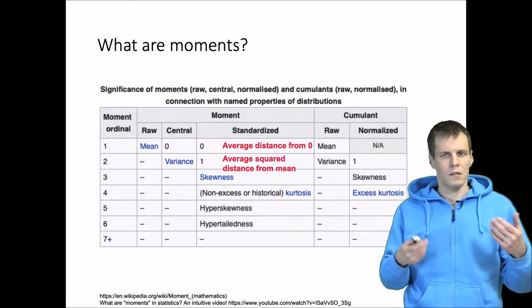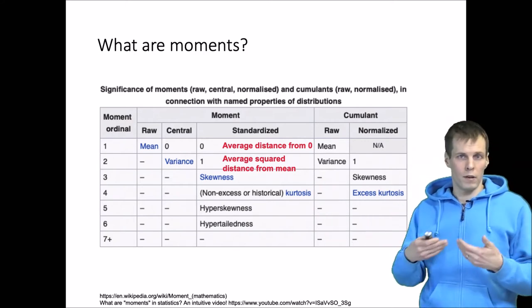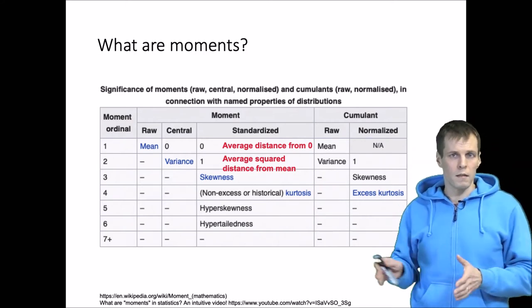So that's the variance, and so on. We have skewness, we have kurtosis, and then we have other quantities that describe distributions.